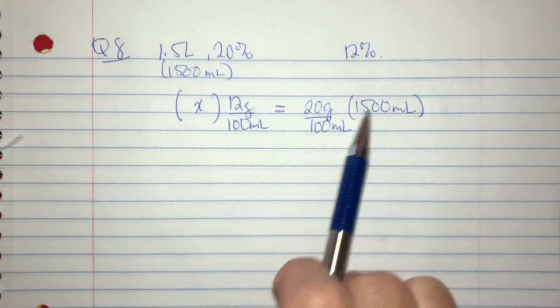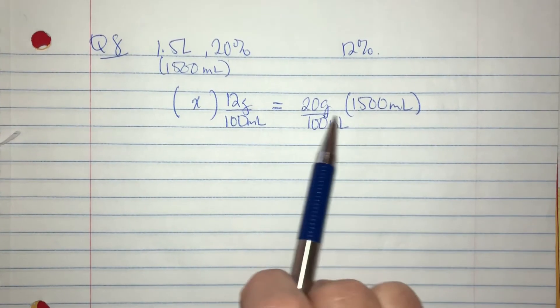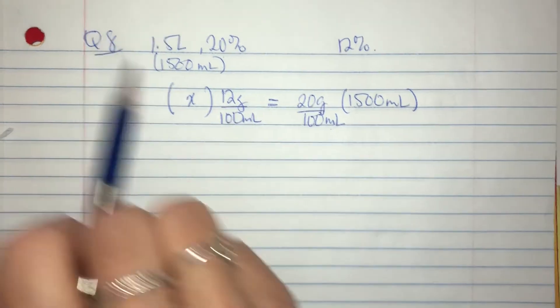And so that's a multiplication here. So 1,500 mils times 20 grams over 100 mils so that we know that this is our total, what we have.